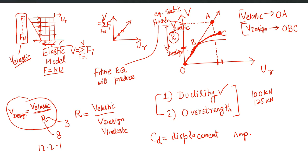According to our seismic design philosophy, we design our structure at V_design level, which is significantly lower than V_elastic by a ratio equal to r. So the idea is that you apply not V_elastic but reduced forces equal to V_design. When you apply V_design to your elastic model, it gives you a roof displacement corresponding to point B on the force-displacement diagram.